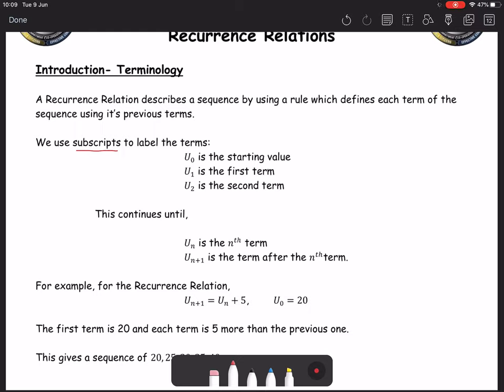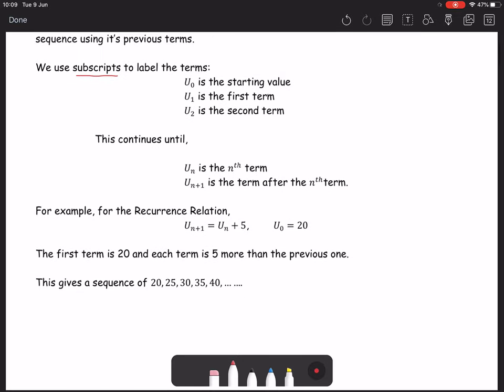And then the next term would be the first term, u₁, the following term, u₂, etcetera. To generalize that sequence, we talk about uₙ being the nth term, whatever that may be. And the term after that would be uₙ₊₁. That allows us to generalize the sequence completely. It doesn't mean it's restricted to a particular part within the sequence.